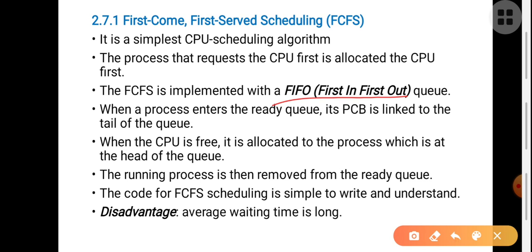FCFS is implemented with a FIFO queue so that we can correctly implement the First Come First Served scheduling. When a process enters the ready queue, its PCB — that is its Process Control Block — will be linked to the tail of that queue, that is at the end. When the CPU becomes free, the CPU is allocated to the process which is at the head of the queue, that is at the front.